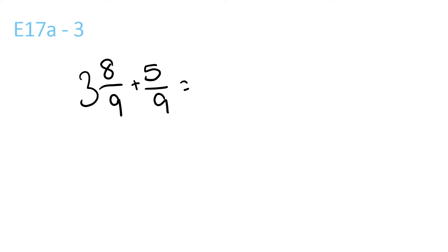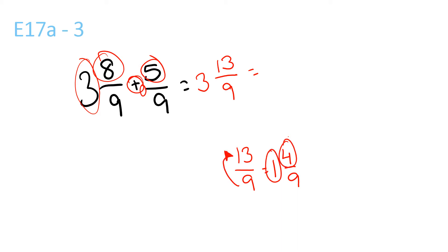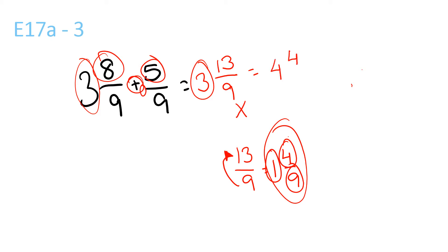Question 3. 3 plus nothing is 3. 8 plus 5 is 13, and the 9 stays the same. 13 over 9 is equal to 1 and 4 over 9, because 9 goes into 13 once with a remainder of 4 over 9. So get the 3 and the 1 and 4 over 9, and plus them. That gives 4 and 4 over 9.